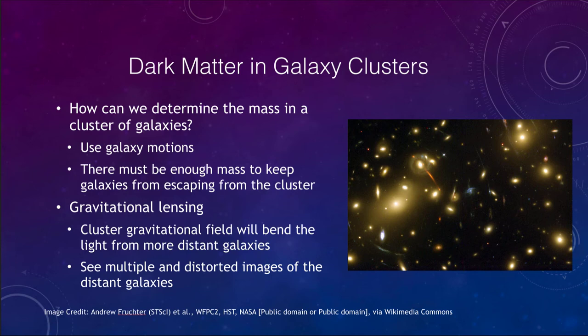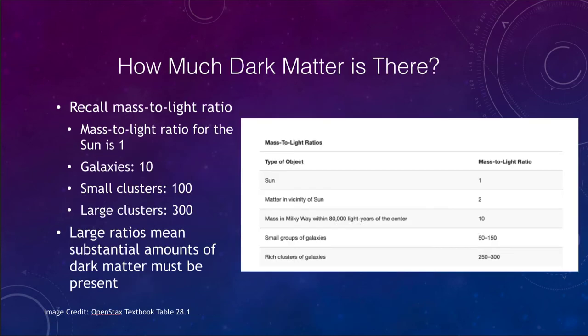So how much dark matter is there? We can look at what we call the mass-to-light ratio. The sun has a mass-to-light ratio of one, meaning it has a mass of one solar mass and a luminosity of one solar luminosity. Galaxies are showing a mass-to-light ratio of 10, meaning they have 10 times the amount of mass for each luminosity unit — so there is already a significant amount of dark matter.